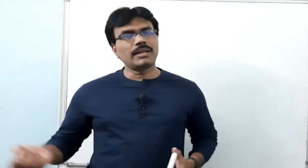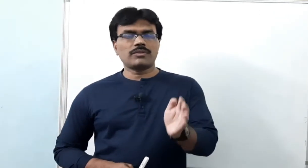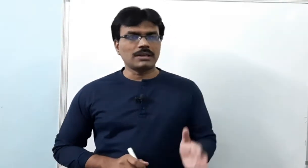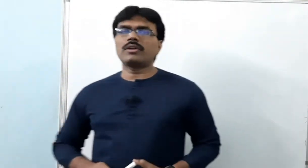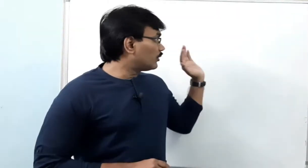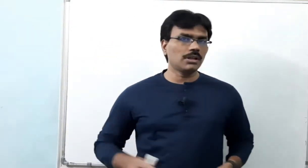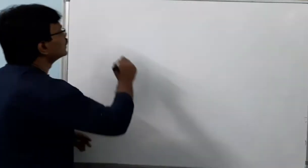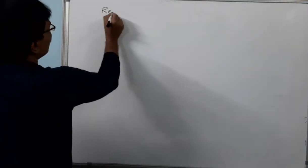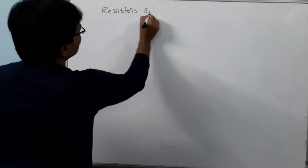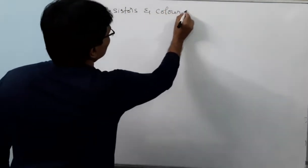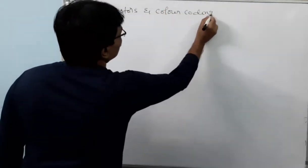Whenever we go to market to buy a resistor, depending on the value you require they will give you a resistor with different colors on it. Nothing will be written over the resistor, but color rings will be there. Based on those color rings we have to calculate the value of resistance. Today we are going to learn how to calculate the resistance value depending on the colors given on the particular resistor.